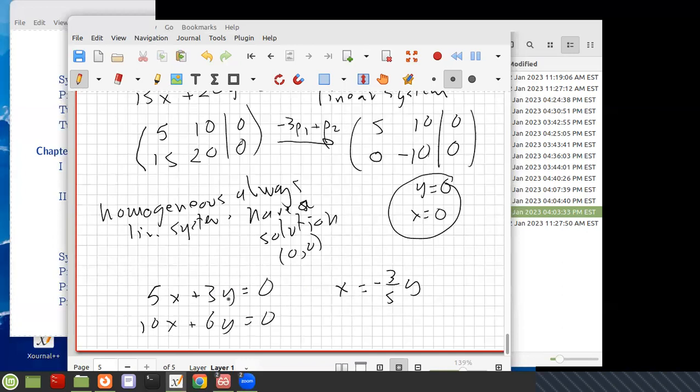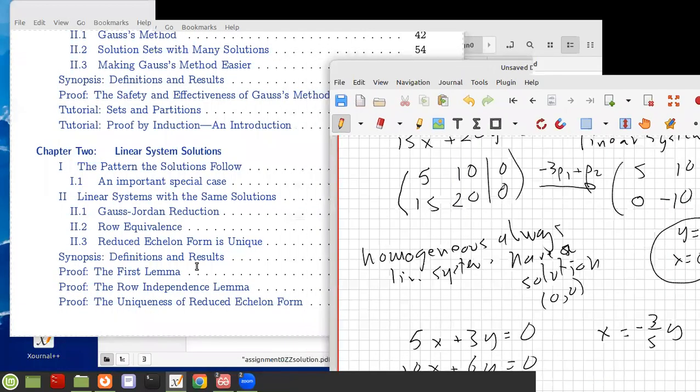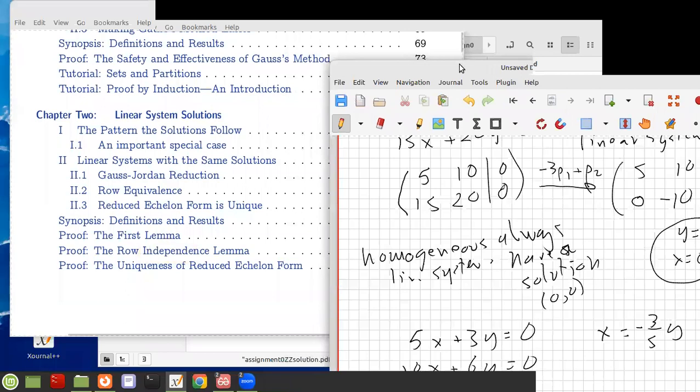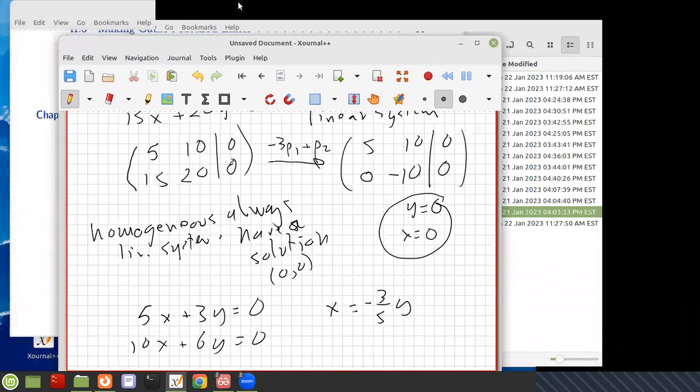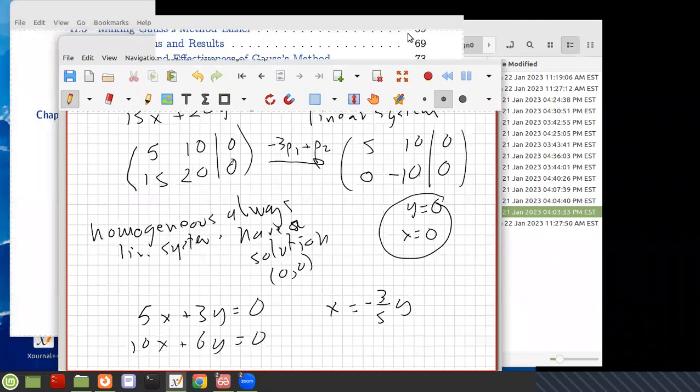But still, (0,0) is going to be one of those. Okay, so maybe the best thing to do now is to let you guys work on that.